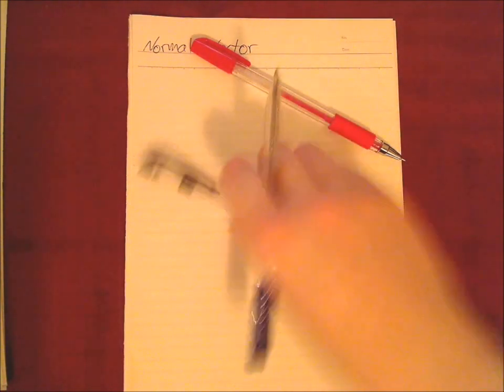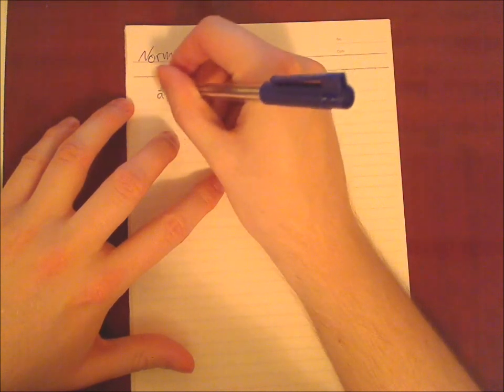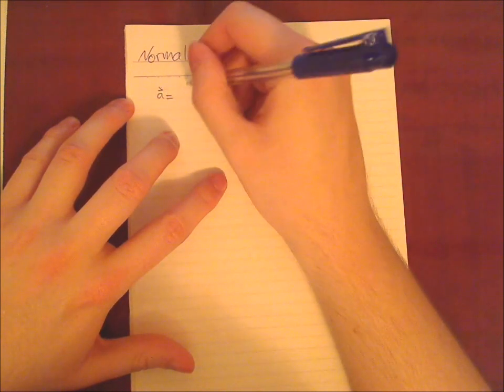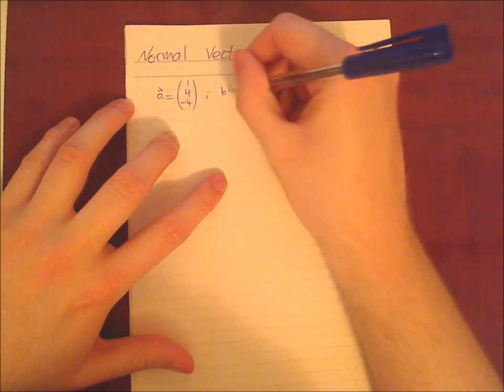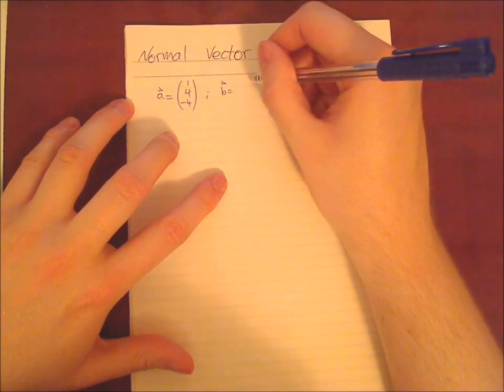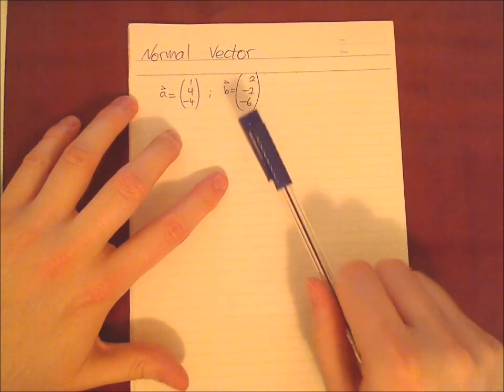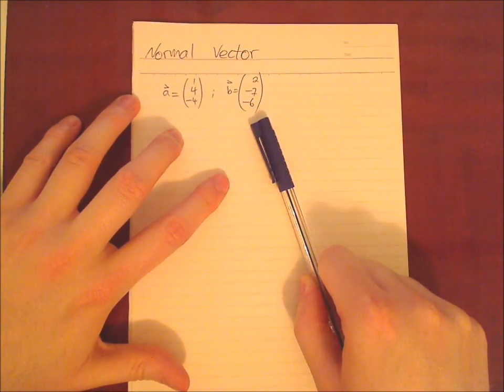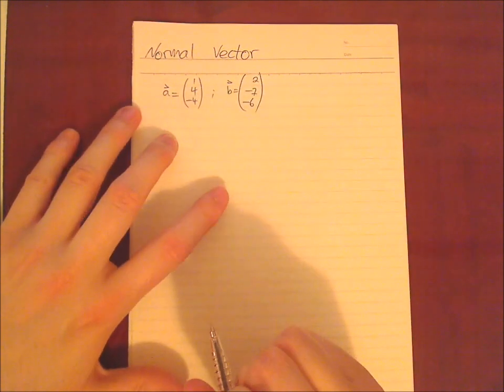And that's what we are going to calculate and I will show you how it works. So we have two vectors in this case a and b. We have a equals 1, 4, minus 4 and b which is 2, minus 7, minus 6 and we want to know what is the normal vector, a vector which has 90 degrees to both of these vectors.